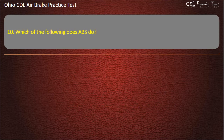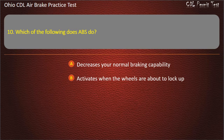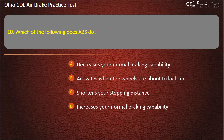Question 10: Which of the following does ABS do? Decreases your normal braking capability. Activates when the wheels are about to lock up. Shortens your stopping distance. Increases your normal braking capability. Answer: Activates when the wheels are about to lock up.